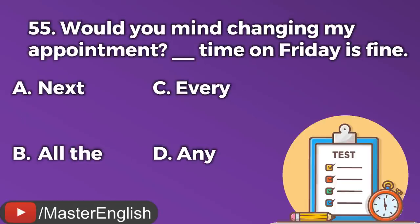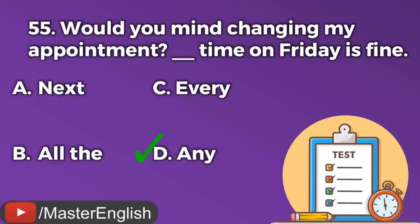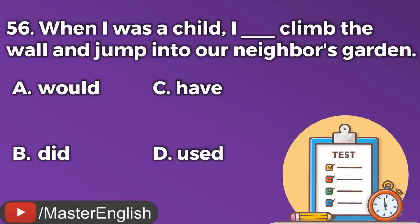Question number fifty-five. Would you mind changing my appointment? ___ time on Friday is fine. A: Next. B: All the. C: Every. D: Any. The correct answer is D: Any. Anytime on Friday is fine. Question number fifty-six. When I was a child, I ___ climb the wall and jump into our neighbor's garden. A: Would. B: Did. C: Have. D: Used. The correct answer is A: Would. When I was a child, I would climb the wall and jump into our neighbor's garden.